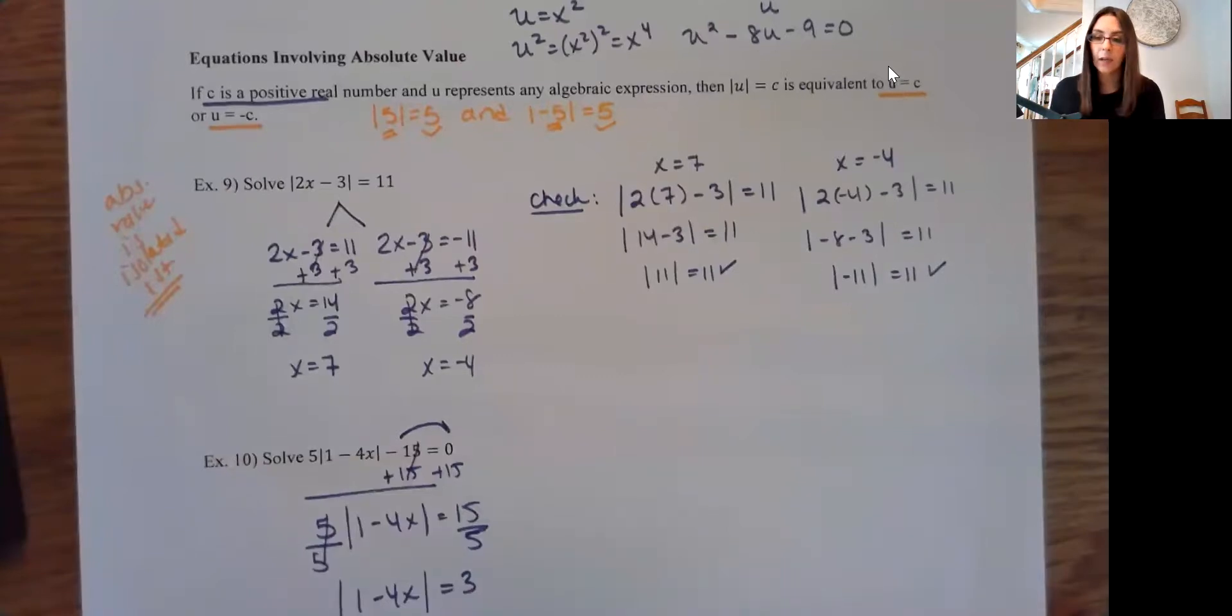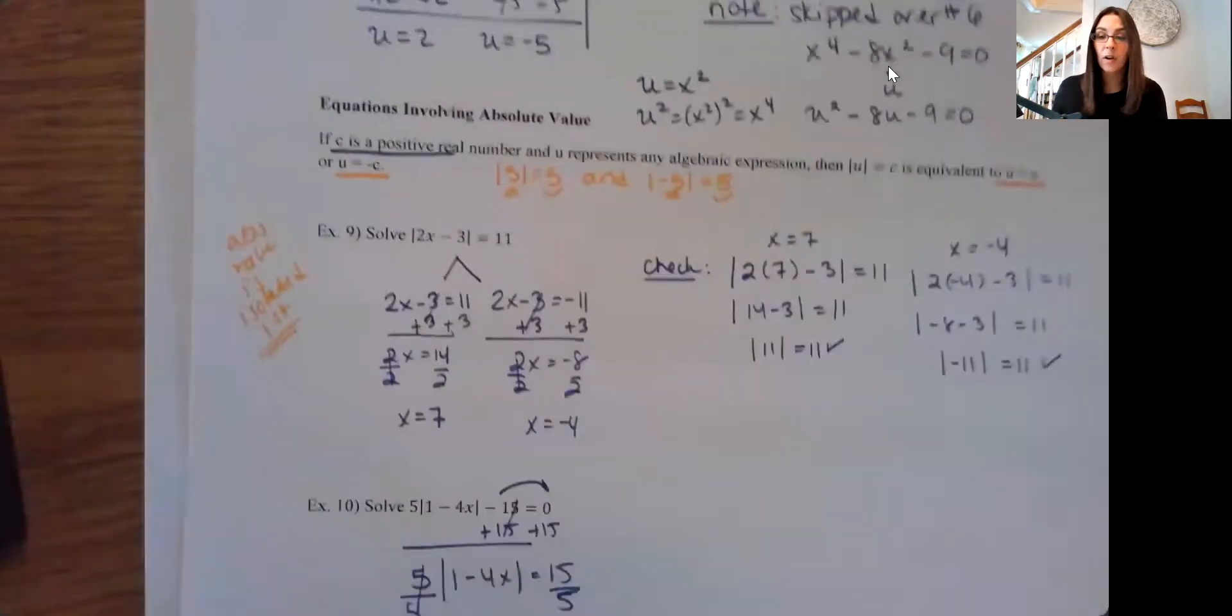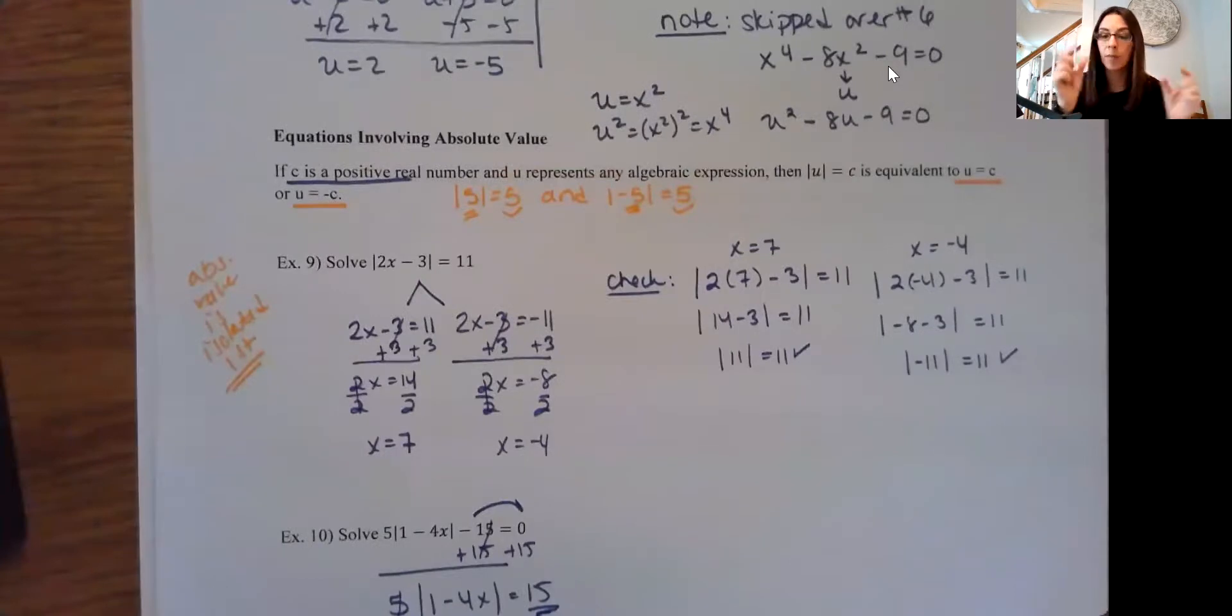So there is a lot here. I would probably suggest maybe making an index card for each style equation with maybe an example on it and the steps. Just so that as you're going through the homework, you can take out those index cards to reference and you can help jog your memory around, how do I solve this type of problem here?